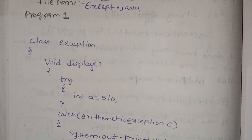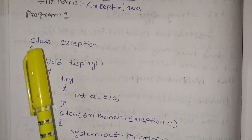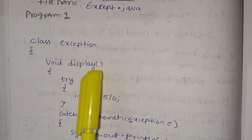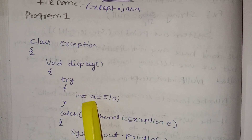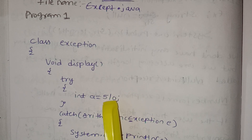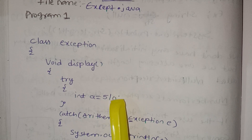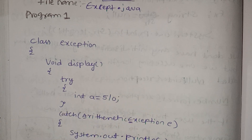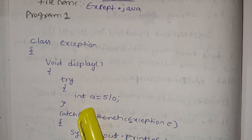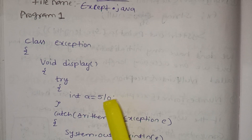Now I will show the program. First, I will show the class and its name. Then I will show the exception handling. We will open the method in a try block. We need to write the code in which we are expecting the exception inside the try block. Then, in the catch block, we handle the exception.